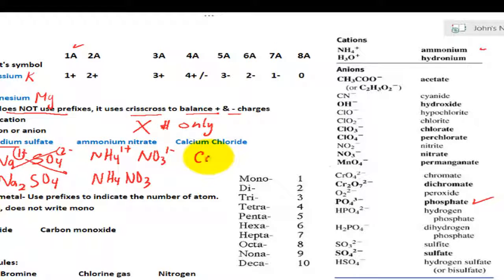Then here we have calcium chloride. Calcium is in group 2A, so therefore it has a 2+. And chloride is in group 7A, coming from chlorine, there you go, which gives us Cl 1-.